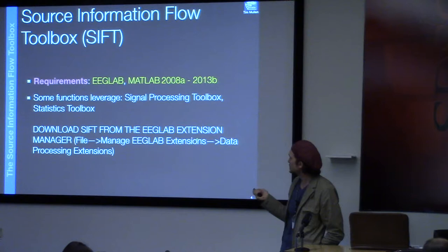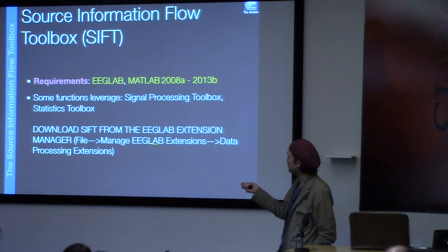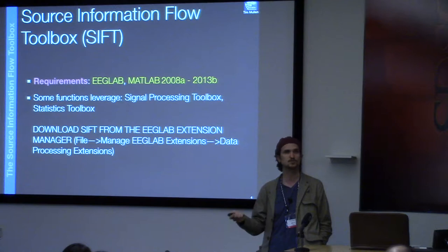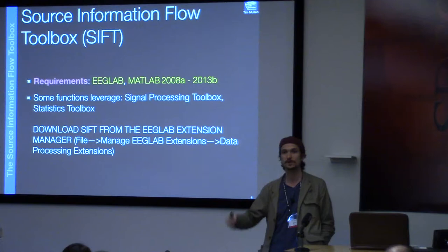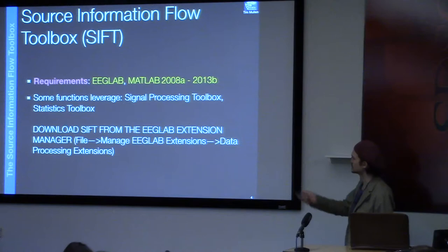To get SIFT, the best way is through the EEGLab Extension Manager: go to File > Manage EEGLab Extensions > Data Processing Extensions, find SIFT, and install it. The version you want is 1.4.1. If you start downloading early, that'll help avoid 50 people all pulling 80-some megabytes simultaneously from the network. It'll also be on USB keys circulating around, but the Extension Manager is preferred.